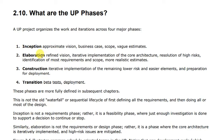In Elaboration, we look at the core architecture of the project we are going to build. We identify high-risk issues and try to minimize those risks. We refine the vision of the project and the core architecture. This includes iterative implementation of the core architecture, resolution of high-risk elements, identification of most requirements and scope, and defining more realistic estimates.